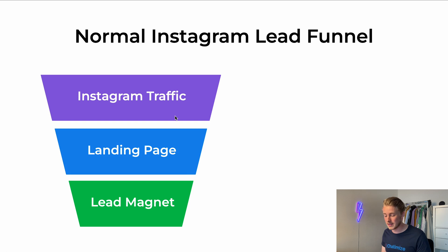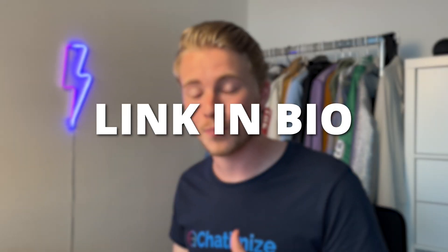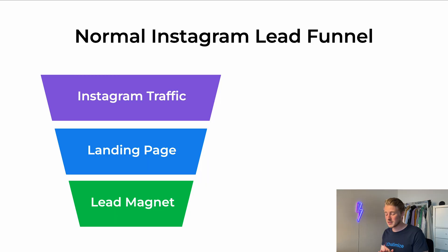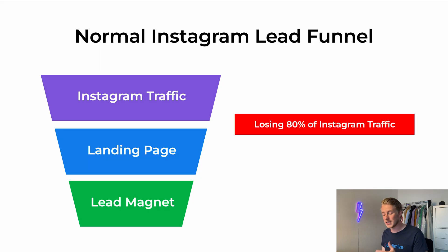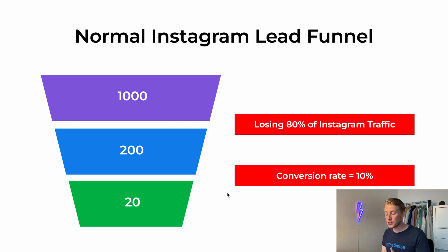A normal Instagram lead funnel looks like this. We promote our free ebook or lead magnet inside our Instagram posts, reels, and stories, and we tell people to go to the link in bio. When they click on the link in bio, they come to our landing page where they fill in their name and email, and then we deliver our lead magnet — followed by automatic emails. But when we send people from our Instagram posts to the link in bio, we actually lose 80% of our Instagram traffic. And of the people that do reach our landing page, only 10% will sign up — because the average conversion rate of a landing page is only 10%. That means starting with a thousand people, only 200 reach the landing page, and only 20 actually sign up for our lead magnet.